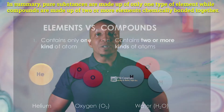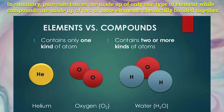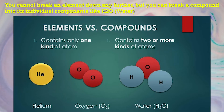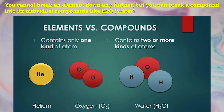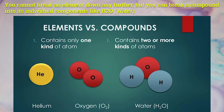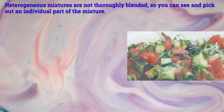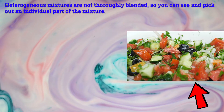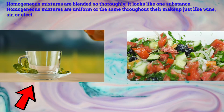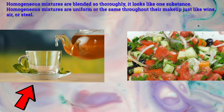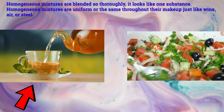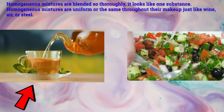In summary: pure substances are made up of only one type of element, while compounds are made up of two or more elements chemically bonded together. You cannot break an element down any further, but you can break a compound into its individual components, like H2O or water. Heterogeneous mixtures are not thoroughly blended, so you can see and pick out individual parts. Homogeneous mixtures are blended so thoroughly they look like one substance and are uniform throughout their makeup — just like wine, air, or steel.